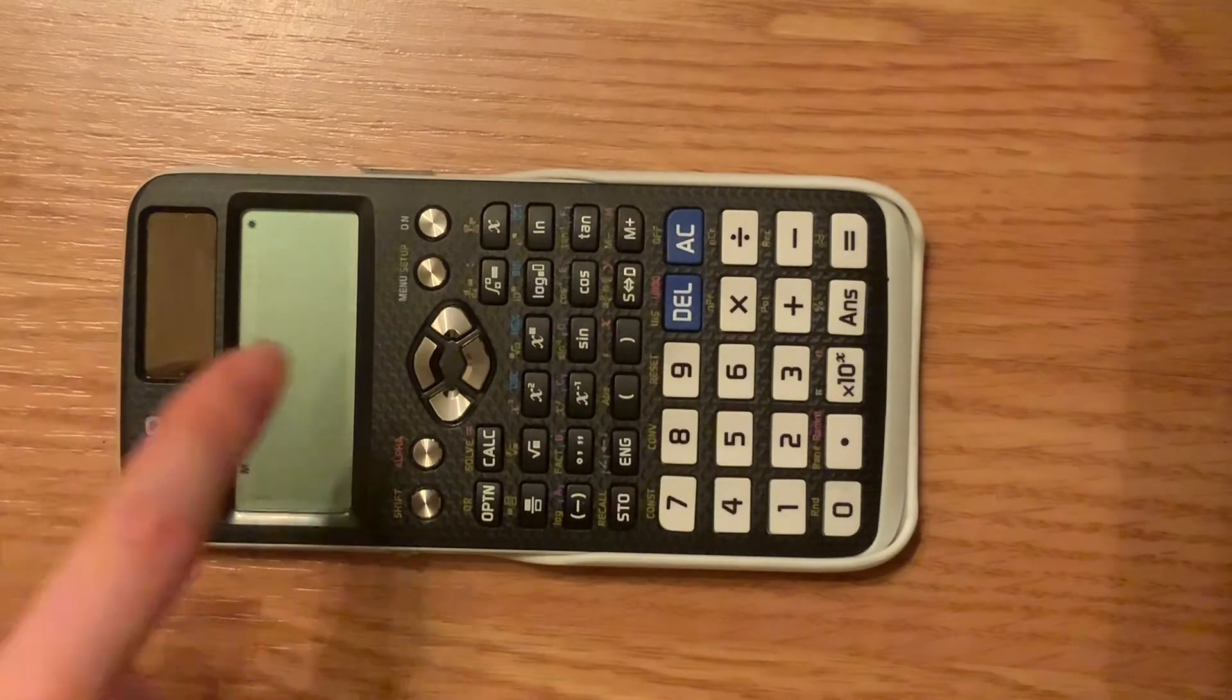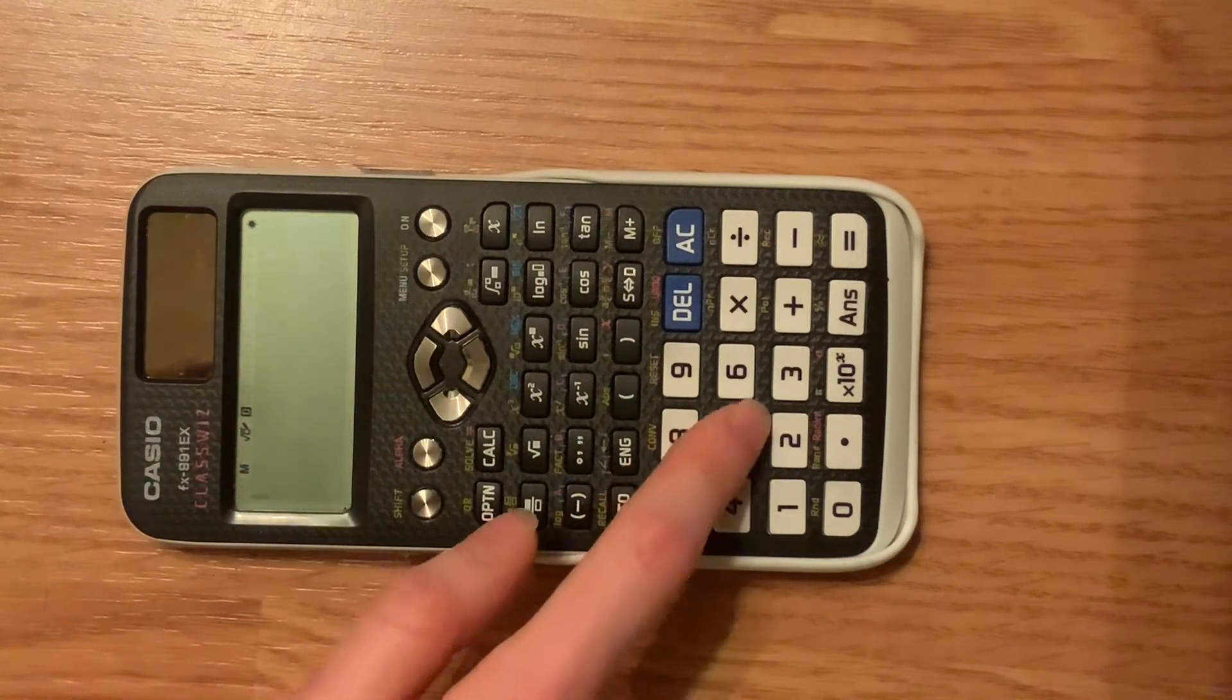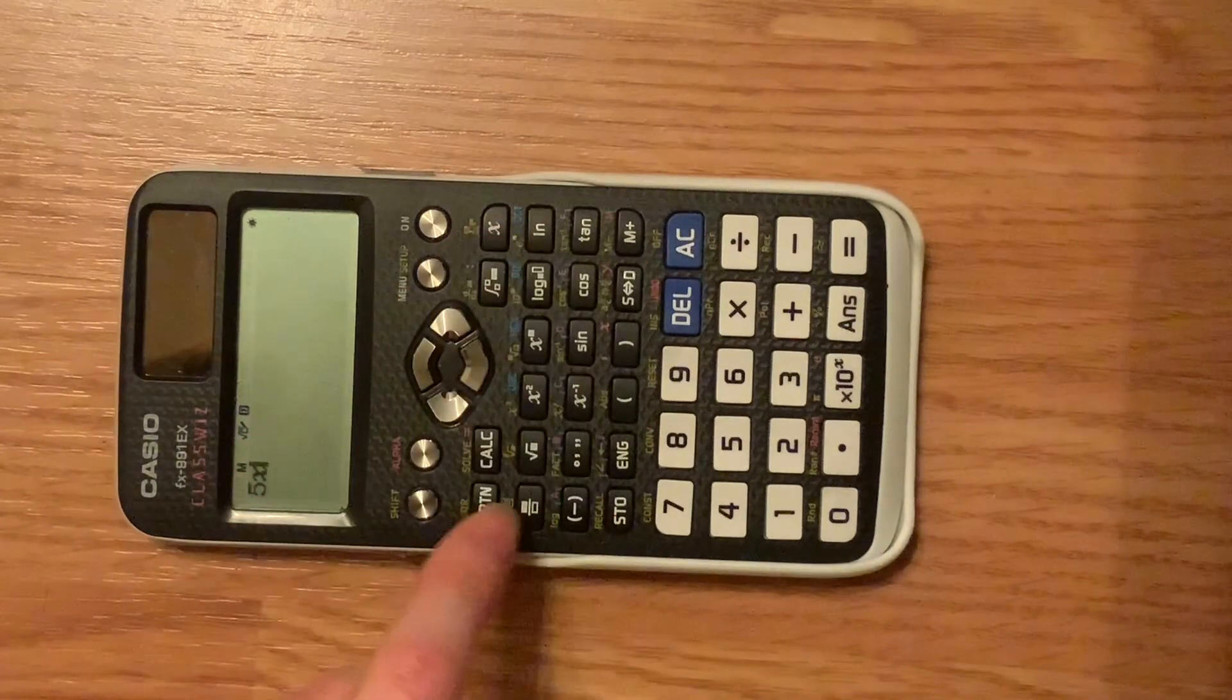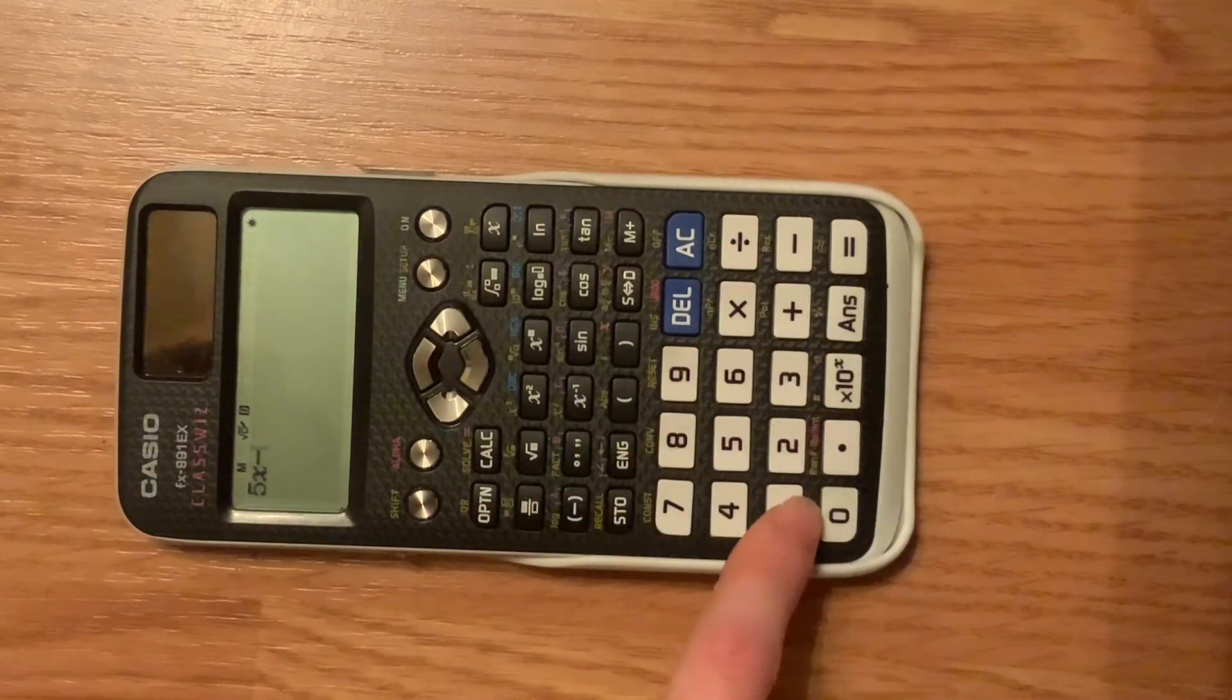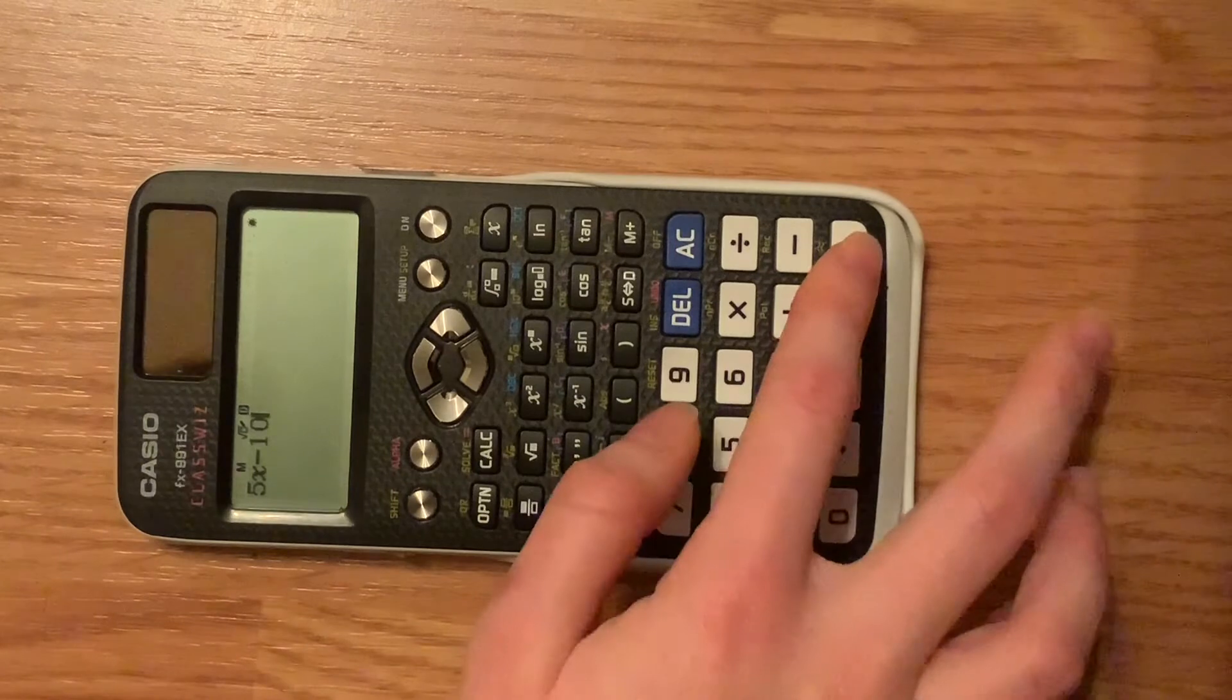Let's clear what we have so far, and you'll type in the first part of your equation. So 5x minus, that's minus not negative, minus 10, and then you push equals.